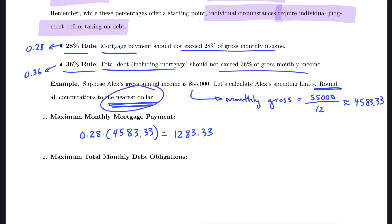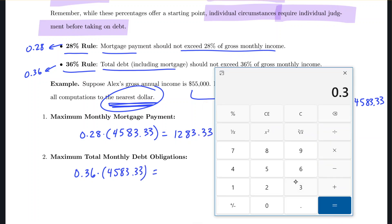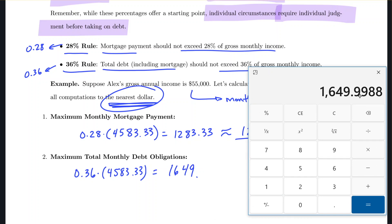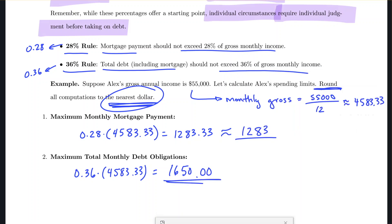Rounding to the nearest dollar, the maximum monthly mortgage payment should be around $1,283. Applying the 36% rule, the maximum total monthly debt obligation is 0.36 times the gross monthly income calculated earlier. Using the calculator with 0.36 times $4,916.67 (approximately), accounting for rounding, the result rounds up to $1,650.